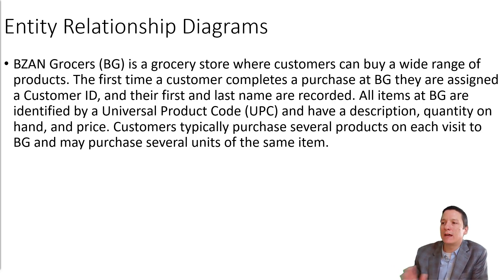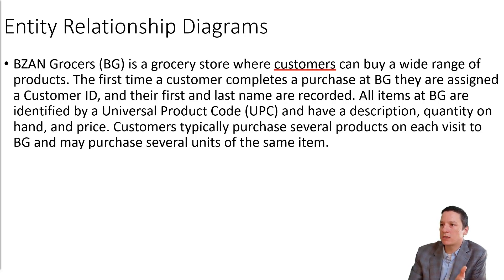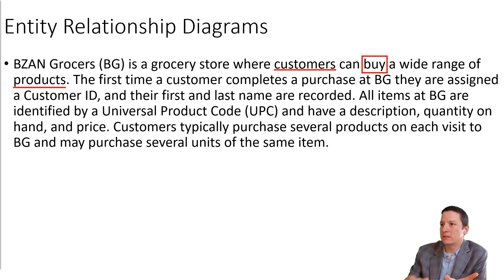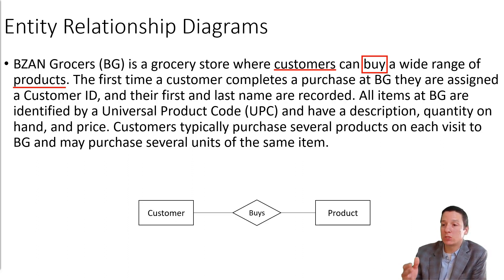Typically we think of entities as the things that are the nouns in our story — the persons, places, and things — and relationships to be the verbs in the story. So as I'm reading through this, it's a grocery store where customers can buy a wide range of products, and I think those are going to be the only two entities in this story. The relationship between these entities is that customers buy products. We represent our entities with squares, so we have customer and product, and then we have this diamond or relationship between the entities. A customer buys a product, or you could say a product is bought by a customer.